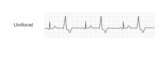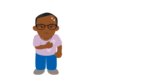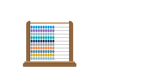PVCs can be described as unifocal when they all originate from the same location and share the same morphology. They can also be labelled multifocal if they originate from different locations and therefore their morphology varies. You need to report any PVCs that are associated with symptoms such as palpitations. It's important to check the patient's symptom diary to see whether any of the PVCs correspond to events that the patient has recorded.